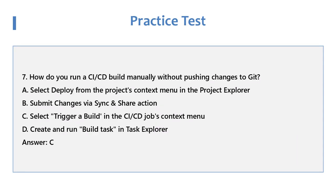Question 7: How do you run a CCD build manually without pushing changes to Git? A. Select Deploy from the Projects context menu in the Project Explorer. B. Submit Changes via Sync and Share Action. C. Select Trigger a Build in the CD Jobs context menu. D. Create and Run Build Task in Task Explorer. Answer: C.